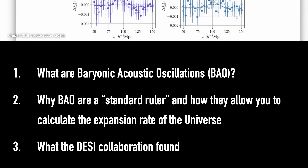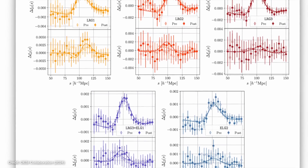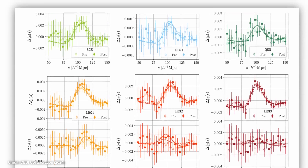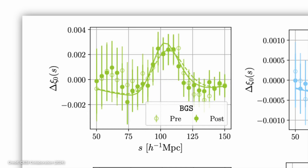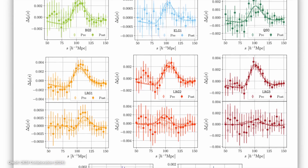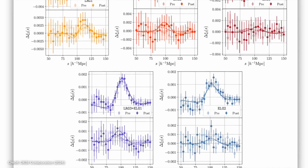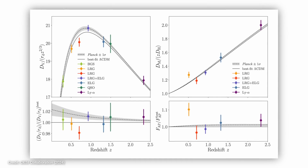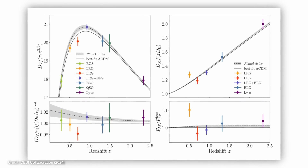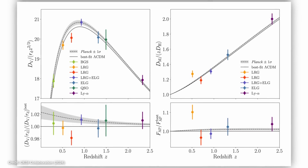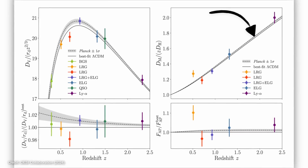The DESI collaboration used several different types of galaxies and tracers to find these bumps. Here is that data at different stages in the universe's history — on each x-axis you've got the distance between galaxies, and on the y-axis how often that distance occurs. Each color refers to a different type of galaxy or tracer at different distances from Earth, so different times in the universe's history. From there they measure the size of these BAO bubbles at each epoch, plotting how the size of the bubble has changed with time as the universe has expanded.